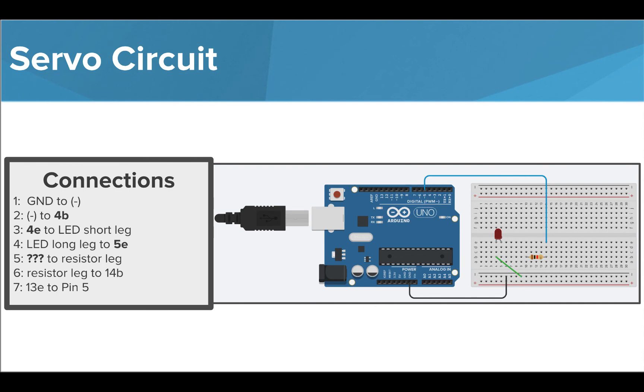Now what if I moved the jumper wire from the ground port to a different port, say 4b? Well, we would need to move the LED with the wire to stay connected, so our LED short leg would be plugged into 4e and our long LED leg would be plugged into 5e.